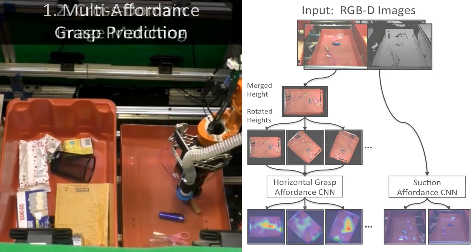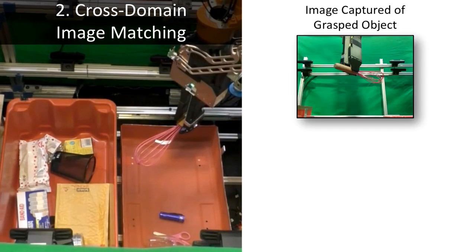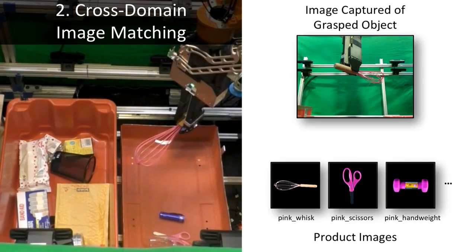After the picking primitive successfully retrieves an object, the gripper holds it in front of two cameras for cross-domain image matching, where color images of the grasped object are matched to the most similar product image using a two-stream convolutional neural network to retrieve its identity.